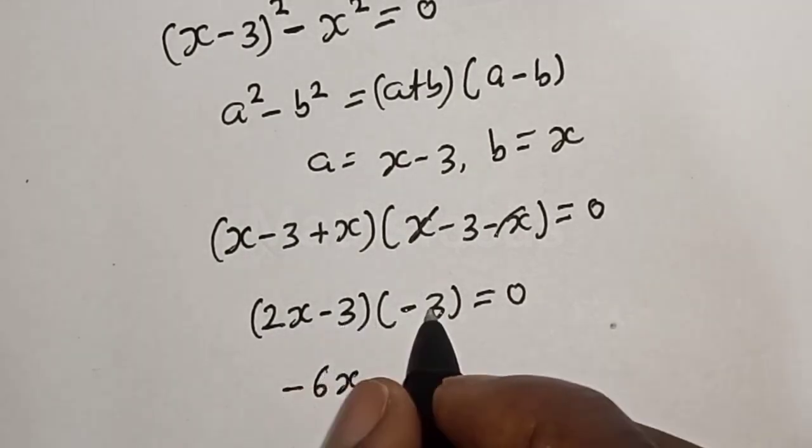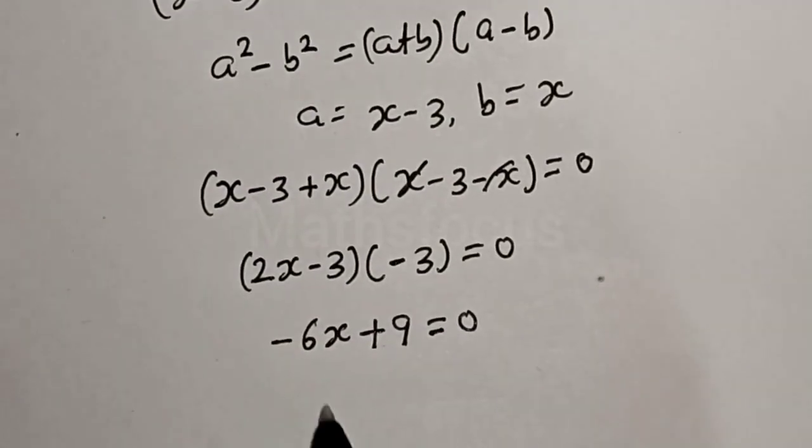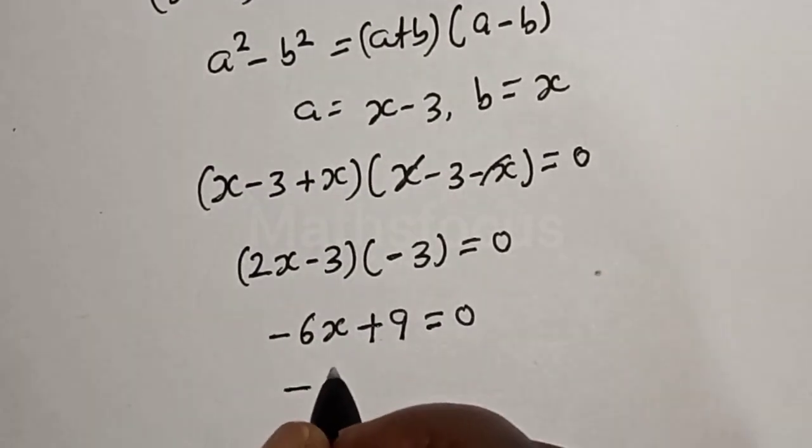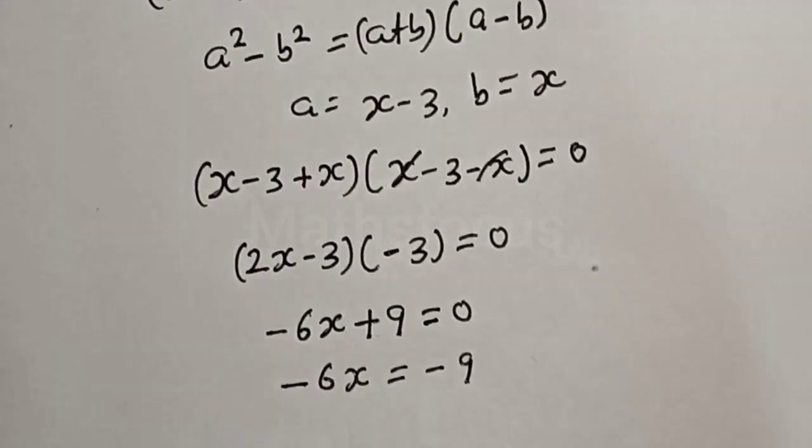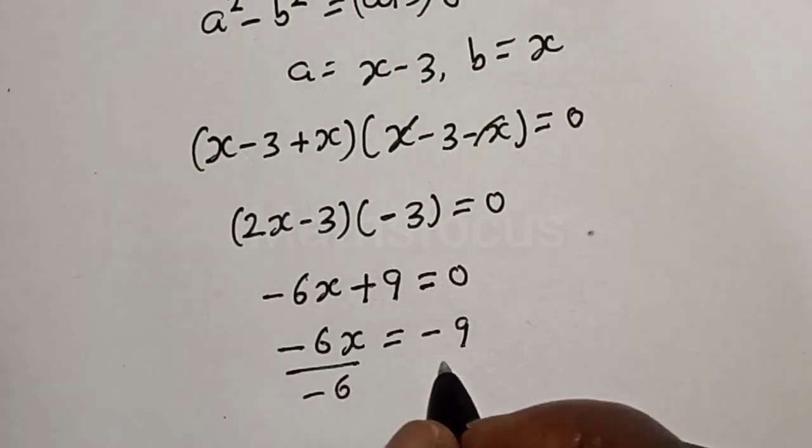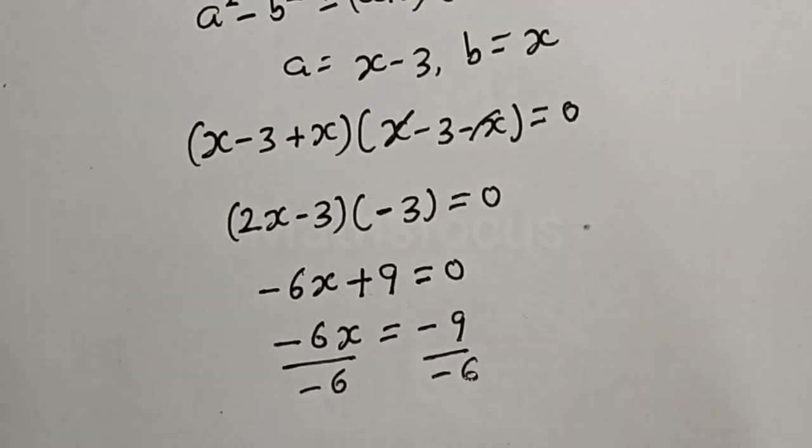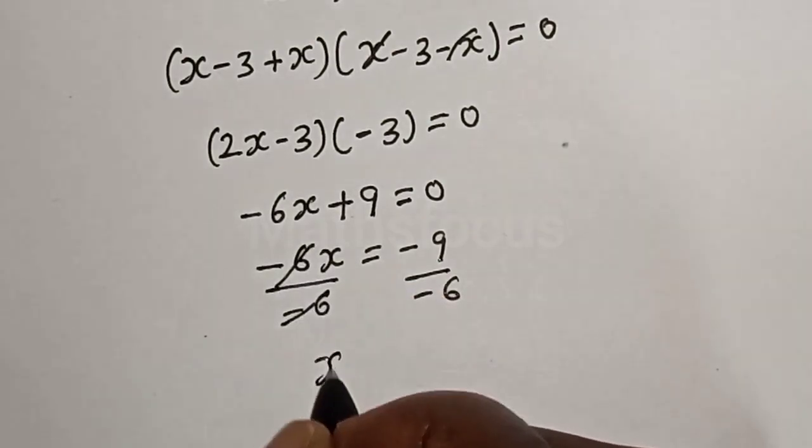Minus 3 times minus 3 plus 9 is equal to zero. This is minus 6x is equal to minus 9. And let's divide both sides by minus 6. This one cancels, x is equal to...